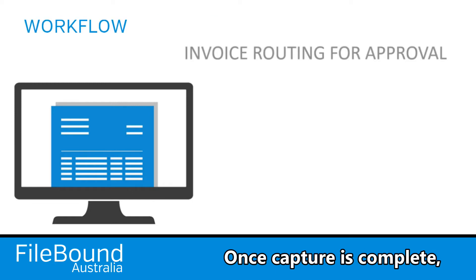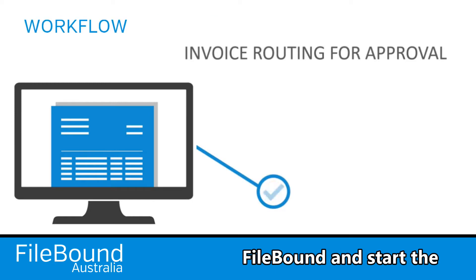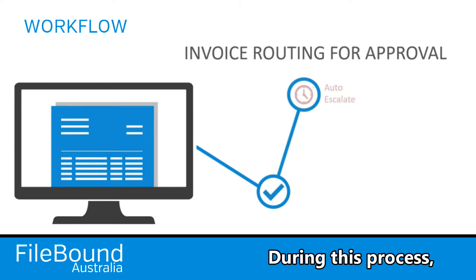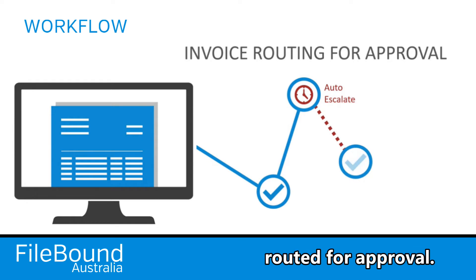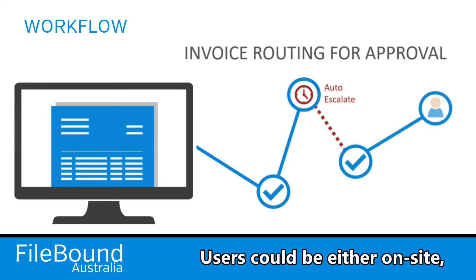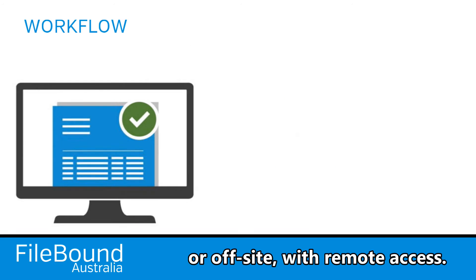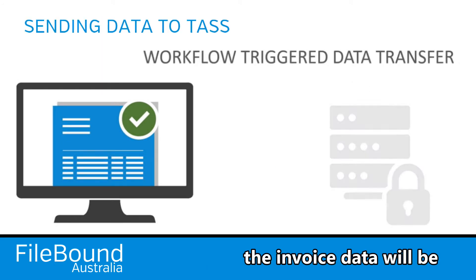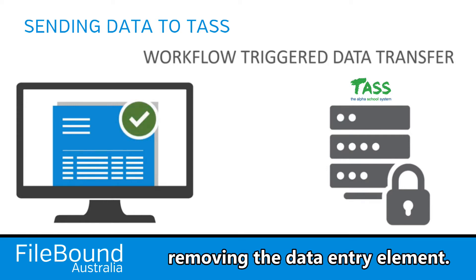Once capture is complete, we'll migrate the invoices to FileBound and start the accounts payable workflow process. During this process, the invoices will be automatically routed for approval. Users can be either on-site or off-site with remote access. Once the invoices are approved, the invoice data will be migrated to the finance platform, removing the data entry element.